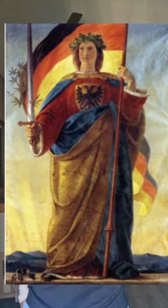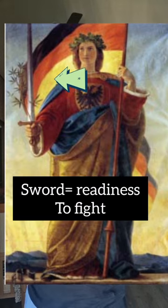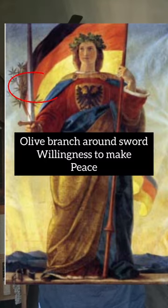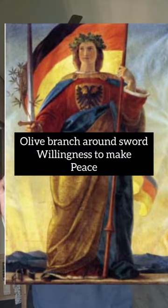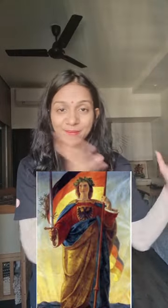In their hands, there is a sword that means readiness to fight — if we are going to fight, we will fight. The sword on the four sides has an olive branch, which means peace — we want peace but don't mistake our peace for weakness. The crown is made with oak leaves, which means heroism, bravery.